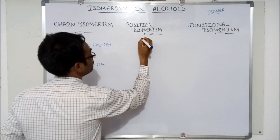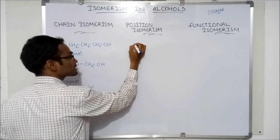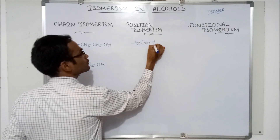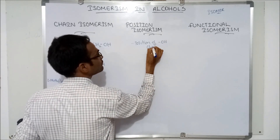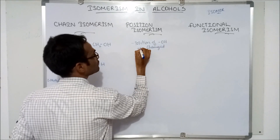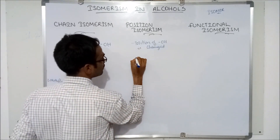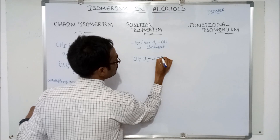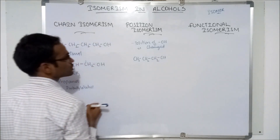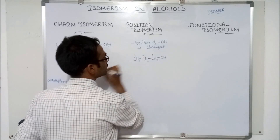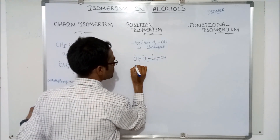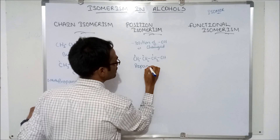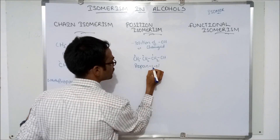Now, position isomerism. In position isomerism, the position of the hydroxyl group is changed. For example, CH3-CH2-CH2OH — here, 1, 2, 3 — the hydroxyl group position is at the first carbon. So it is propan-1-ol.